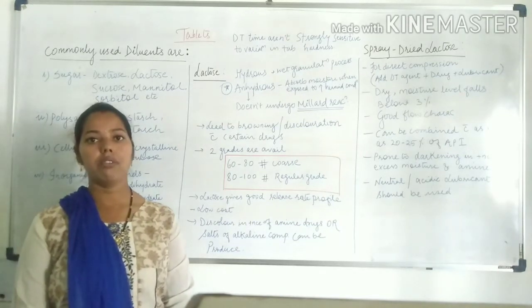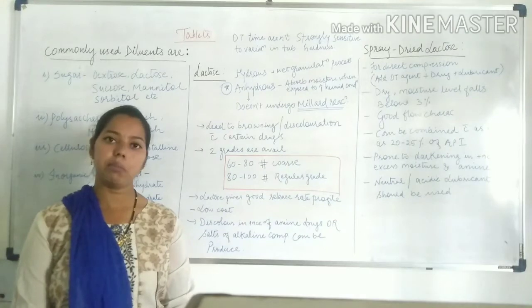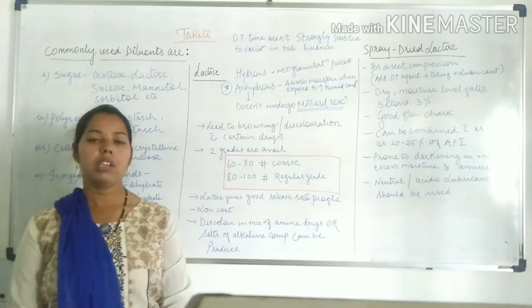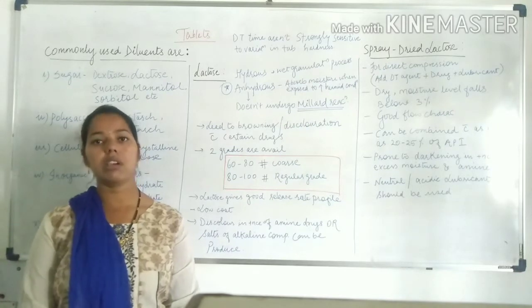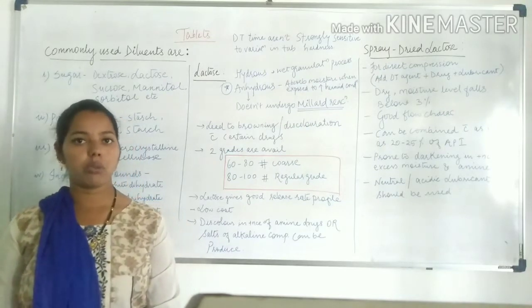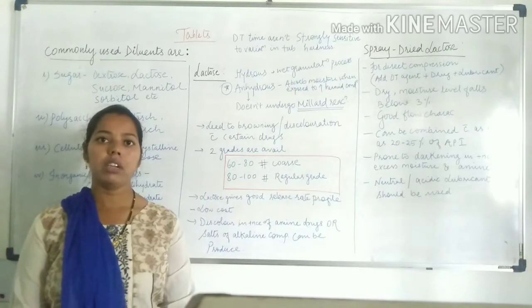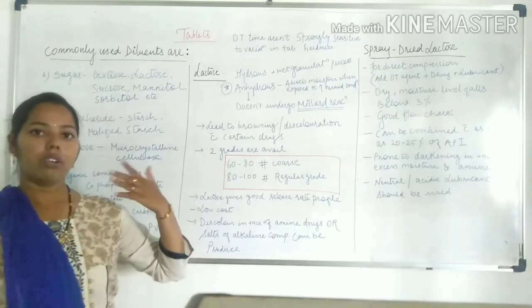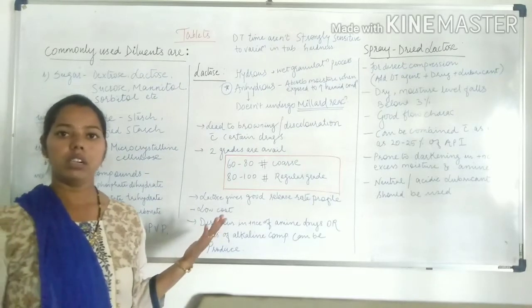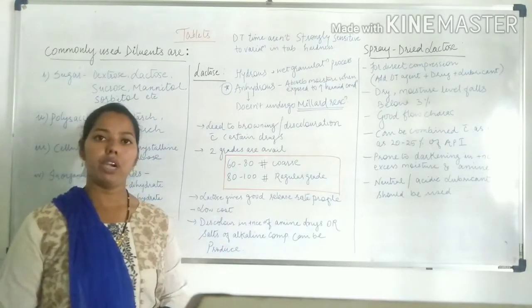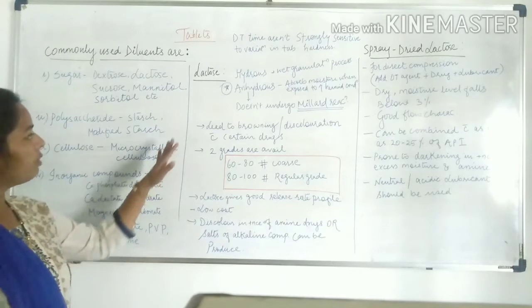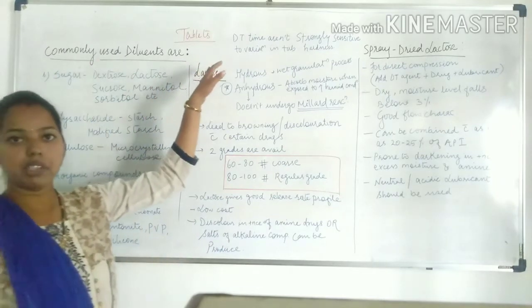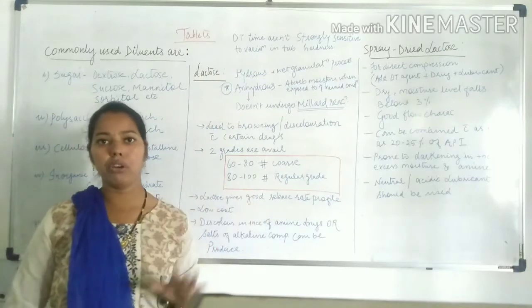Today we are going to start with the excipients or diluents which are used in the manufacturing of tablets. In the previous video we discussed about the ideal characteristic properties of the diluents and which are the parameters on which we basically select the diluents for the manufacturing of tablets. So today we are going to start with the commonly used diluents.